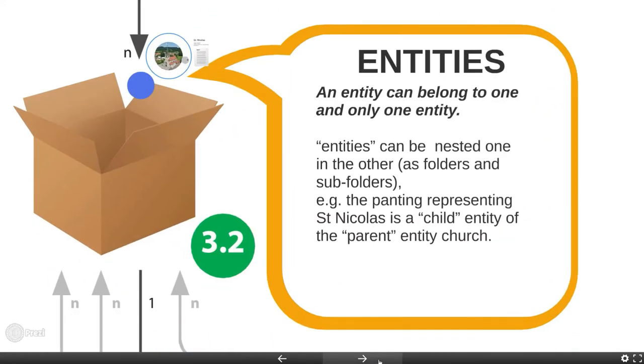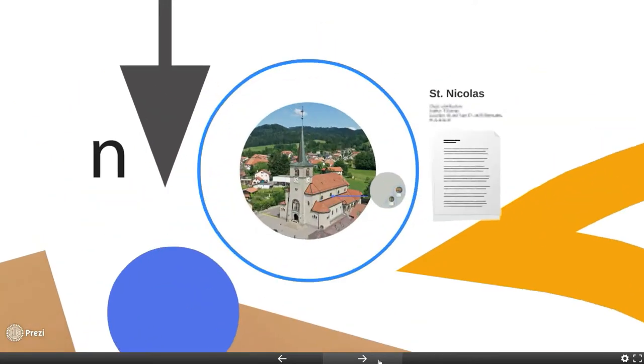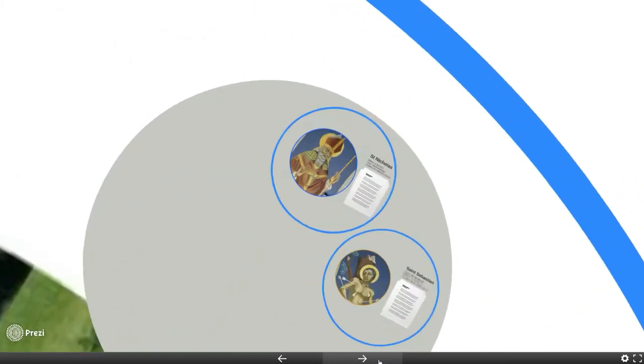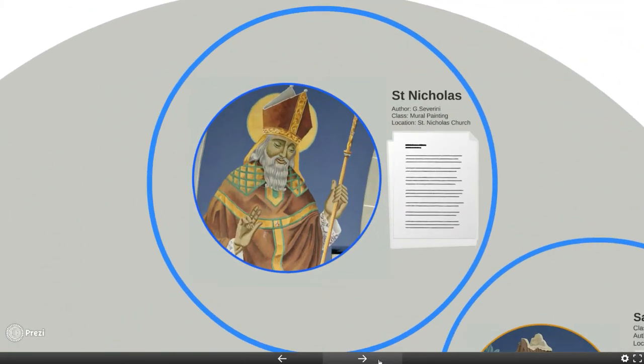Entities can have child entities. Every entity can have one and only one parent entity. As an example, we can have a record describing the church of St. Nicholas, which is heritage itself, and a record describing each mural in the church. There are no limits to the number of subentities that can be created and nested one in the other recursively, as folders and subfolders.